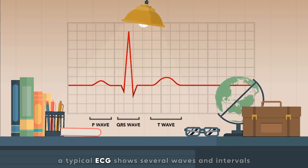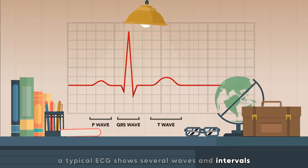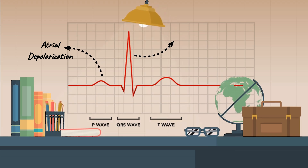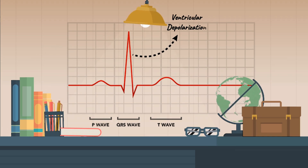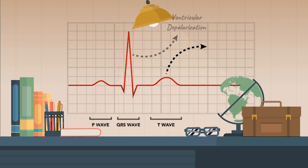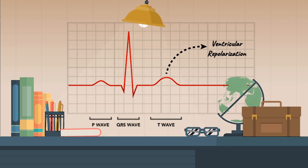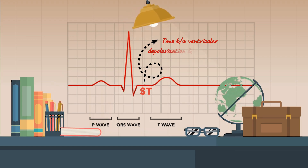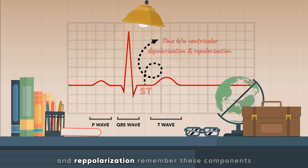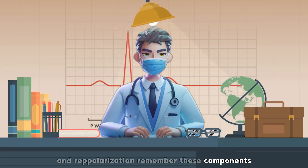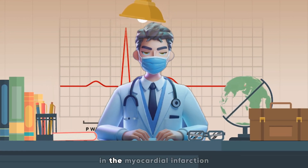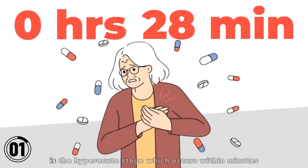A typical ECG shows several waves and intervals. The P wave represents atrial depolarization. The QRS complex shows ventricular depolarization. The T wave indicates ventricular repolarization. And the ST segment represents the time between ventricular depolarization and repolarization. Remember these components — they are the foundation for interpreting ECG changes in myocardial infarction.